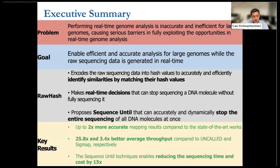In our results, we show that RawHash provides up to 2x more accurate mapping results compared to state-of-the-art works. It also provides around 26x and 3.4x better average throughput compared to these state-of-the-art works, namely Uncalled and Sigmap respectively. The Sequence Until technique enables reducing the sequencing time and cost by 15x.